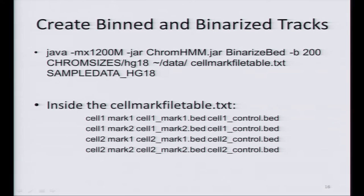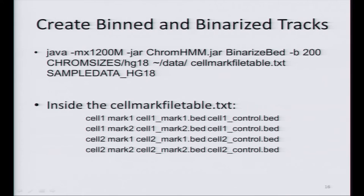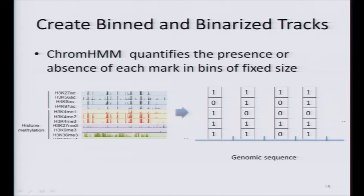Another thing to keep in mind: you can put data for multiple cell types in the same CellMarkFile. This means you will learn a model using all the data together, which is something you should do if you have multiple cell types — you should not learn a separate model for each one, otherwise it will be difficult to compare. Finally, the last parameter is the output folder where ChromHMM will store these binarized tracks.